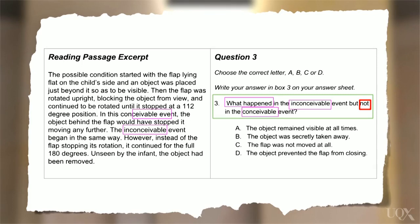So now I'll go back to the text and check. You may need to read quite carefully at this point to make sure that you understand. Option B says that the object was secretly taken away. Let's check the text to see if it says something similar.